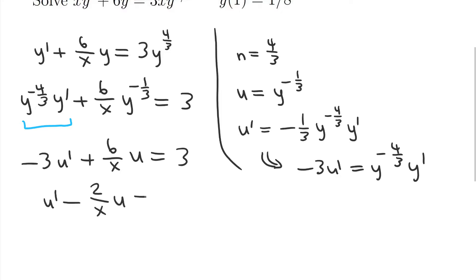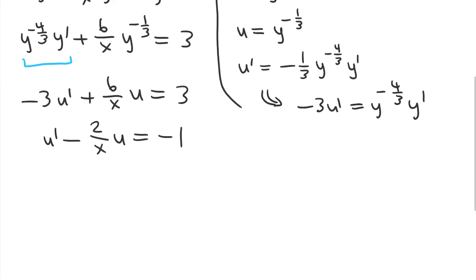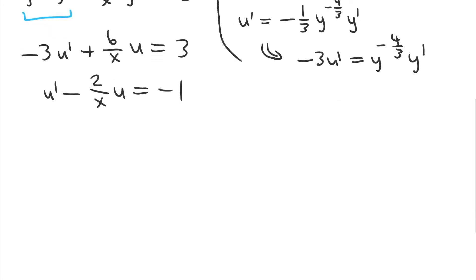u prime minus 2 over x u is equal to negative 1. And from here, I can use whatever method you'd like to solve these types of equations. Linear first order differential equations. I'll use an integrating factor. So the integrating factor is e to the coefficient on u. So I have negative 2 over x dx. And the anti-derivative of that is negative 2 natural log x. We don't need the absolute value because you only need one possible integrating factor. We get natural log x to the negative 2. So we get 1 over x squared.